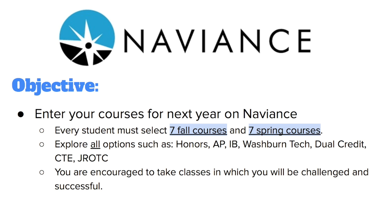Every student must select seven fall courses and seven spring courses. Washburn Rural High School is fortunate to offer several incredible academic opportunities for students. We encourage you to explore all options such as Honors, AP, IB, Washburn Tech, Dual Credit, CTE, and JROTC. Students are encouraged to take the most rigorous course of study in which they can be challenged and successful. A strong academic program correlates with a higher college graduation rate.